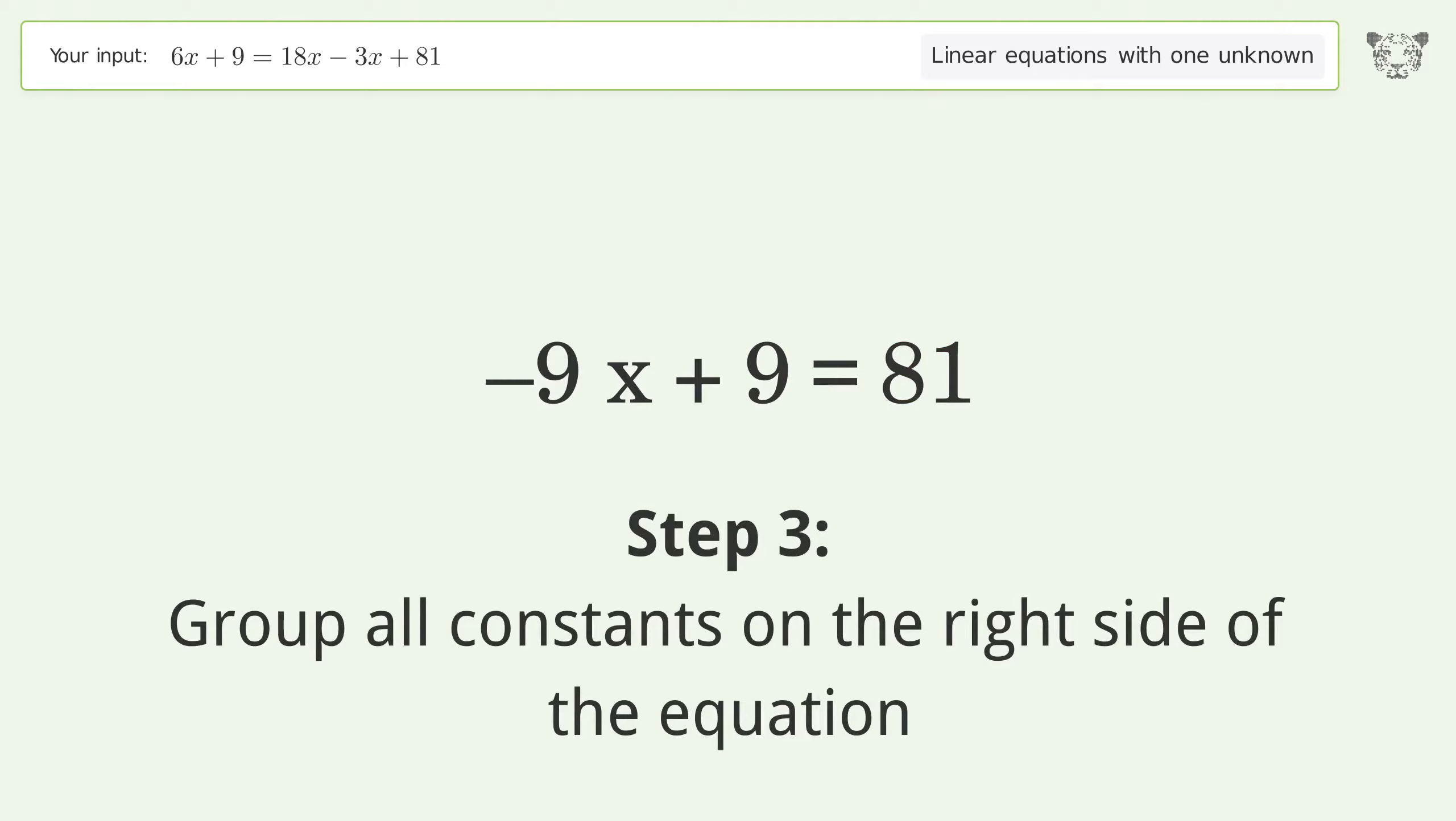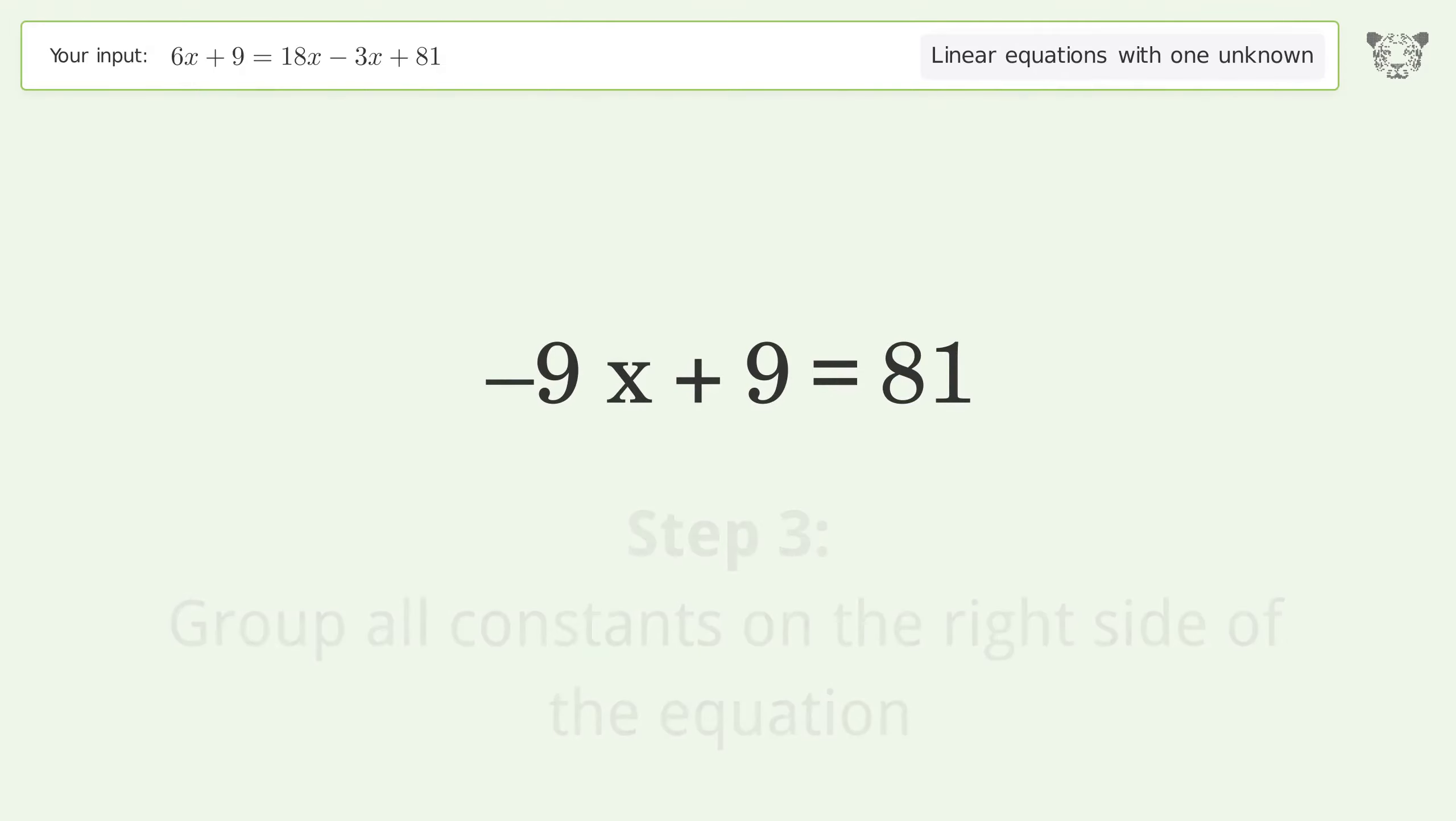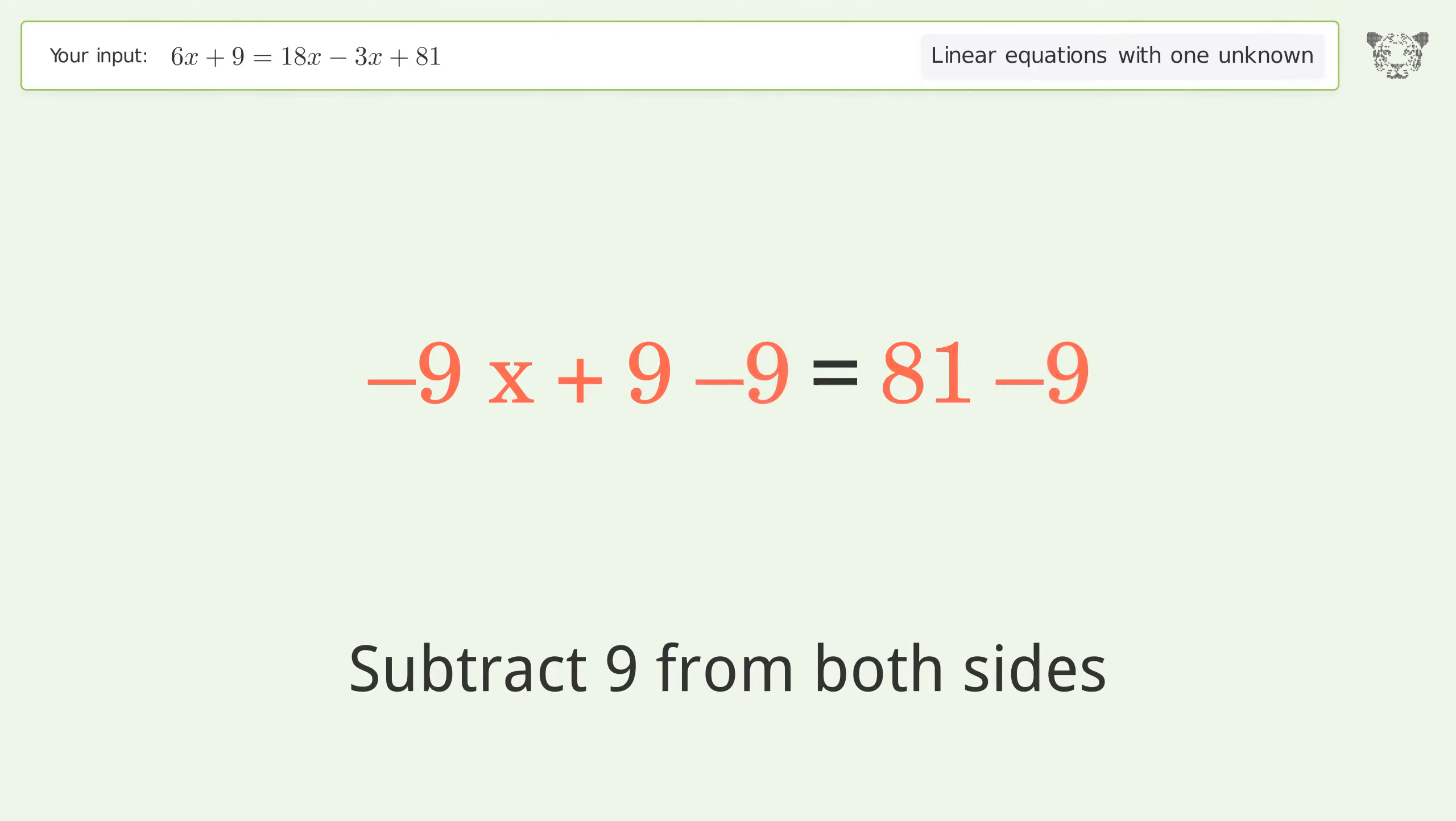Group all constants on the right side of the equation. Subtract 9 from both sides. Simplify the arithmetic.